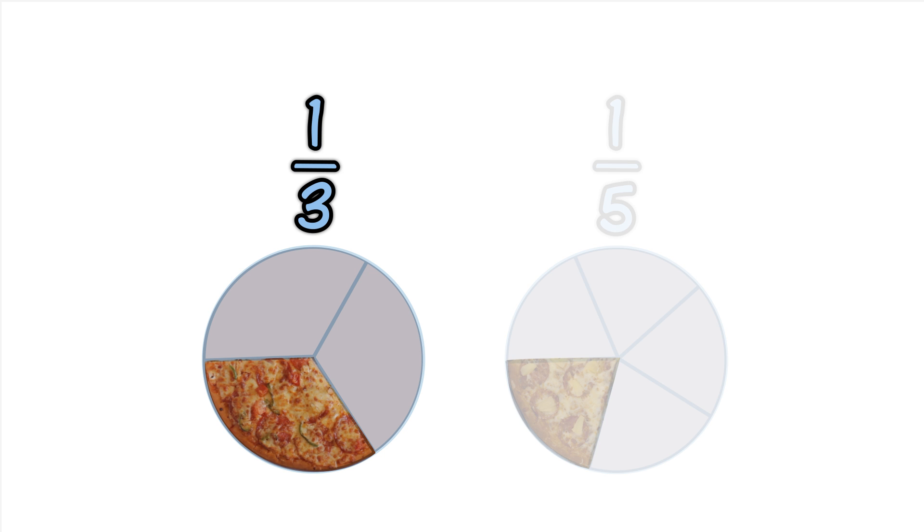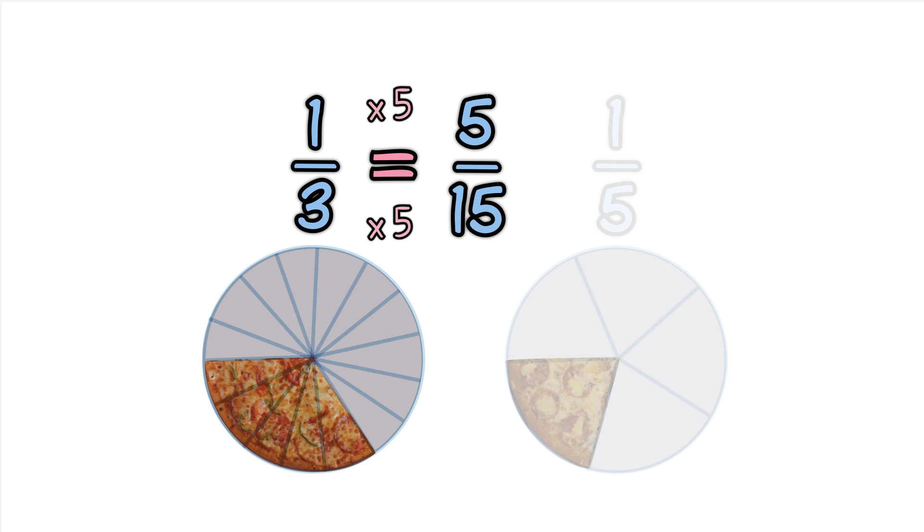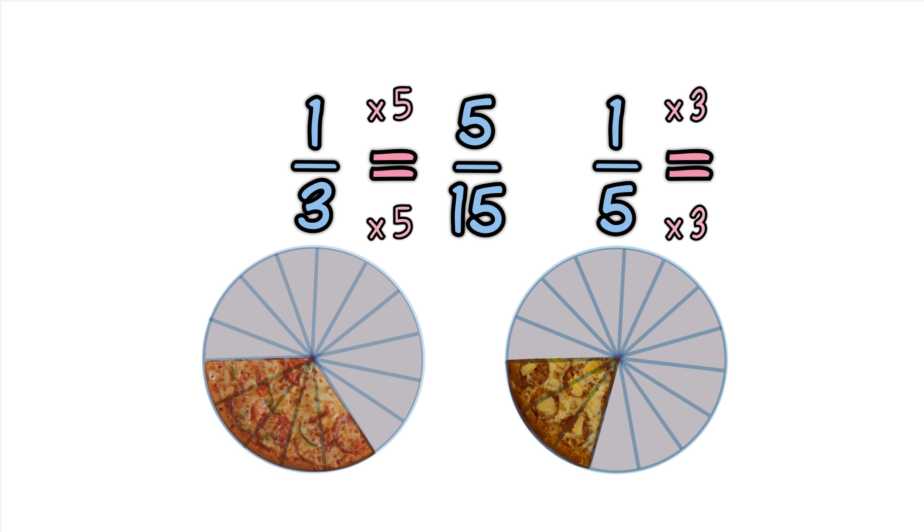The first fraction: By multiplying the top and bottom by 5, we end up with 5/15. The second fraction: By multiplying the top and bottom by 3, we end up with 3/15.